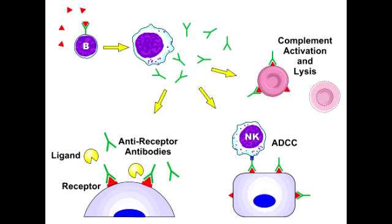What are the three different mechanisms of Type 2 Hypersensitivity? The first mechanism is opsonization, which will lead to phagocytosis and complement activation. Basically, the antibodies will tag the pathogen, and that pathogen will then get opsonized and phagocytosed.